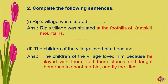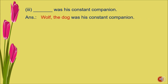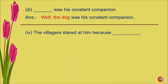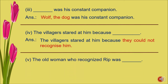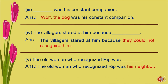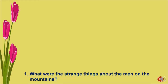Number three — Wolf the dog was his constant companion. Number four — the villagers stared at him because they could not recognize him. Number five — the old woman who recognized Rip was his neighbor.